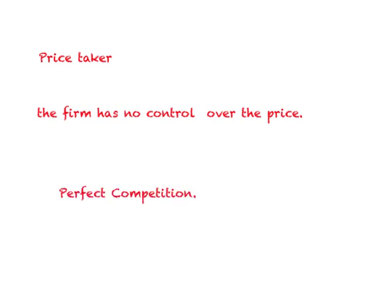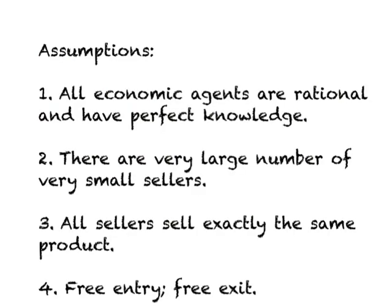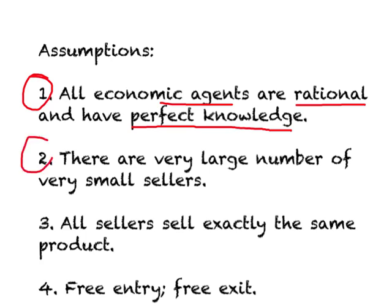Next, we look at the conditions under which perfect competition can exist. The first assumption is that all economic agents — consumers and producers — are rational. Rational consumers maximize satisfaction, and rational producers maximize total profits. Additionally, all economic agents have perfect knowledge: they know everything that needs to be known about a product, its price, and so on.